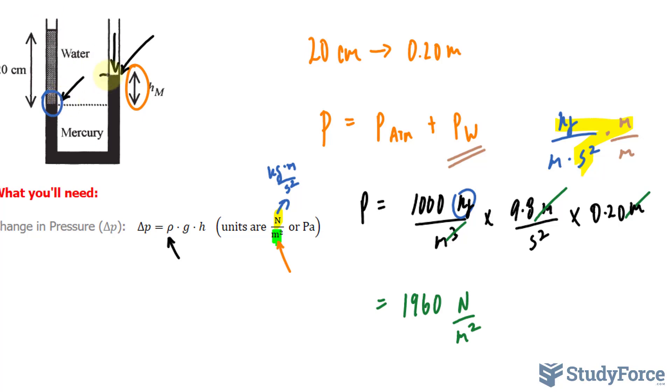That being said, we can find out the height of this column relative to where the water meets the Mercury here. By taking this value of 1,960, setting it as the pressure in this formula,